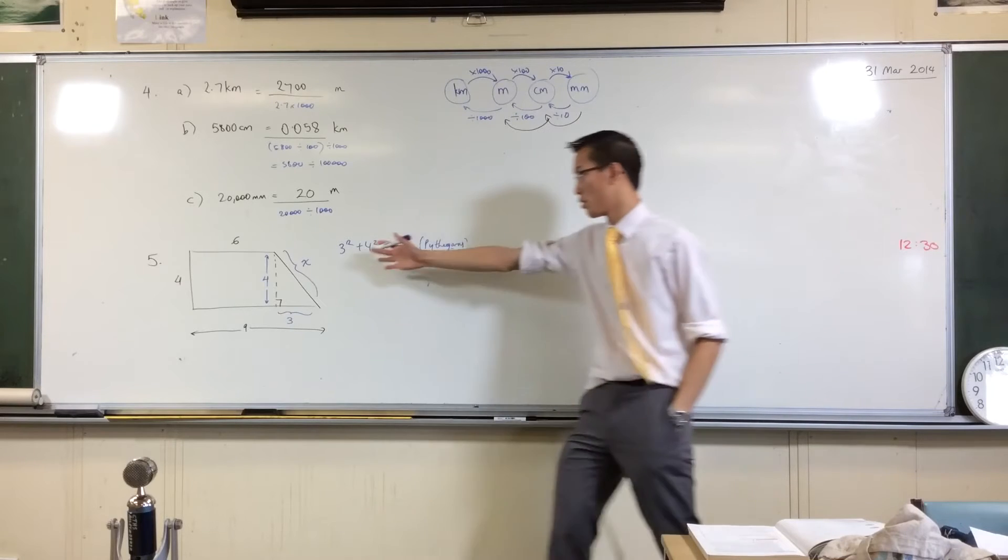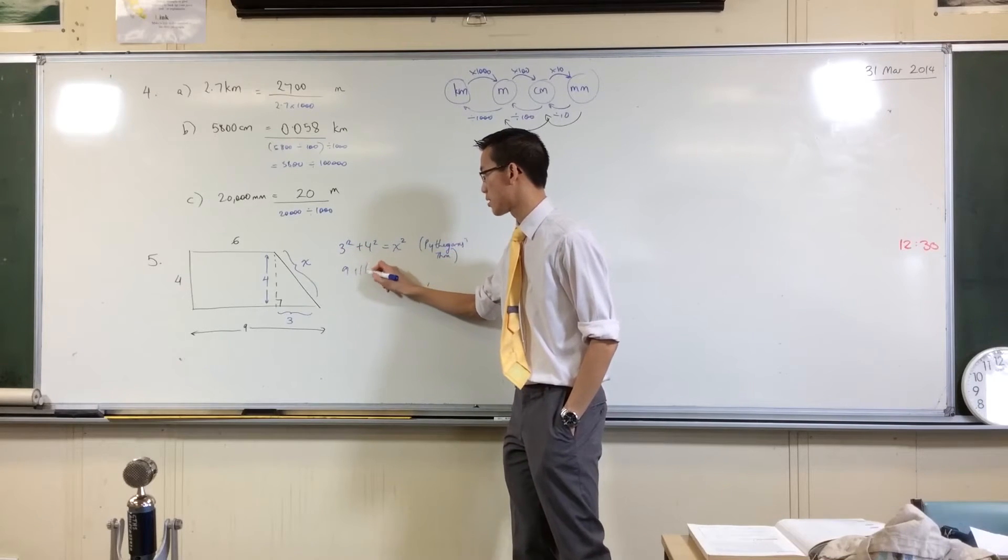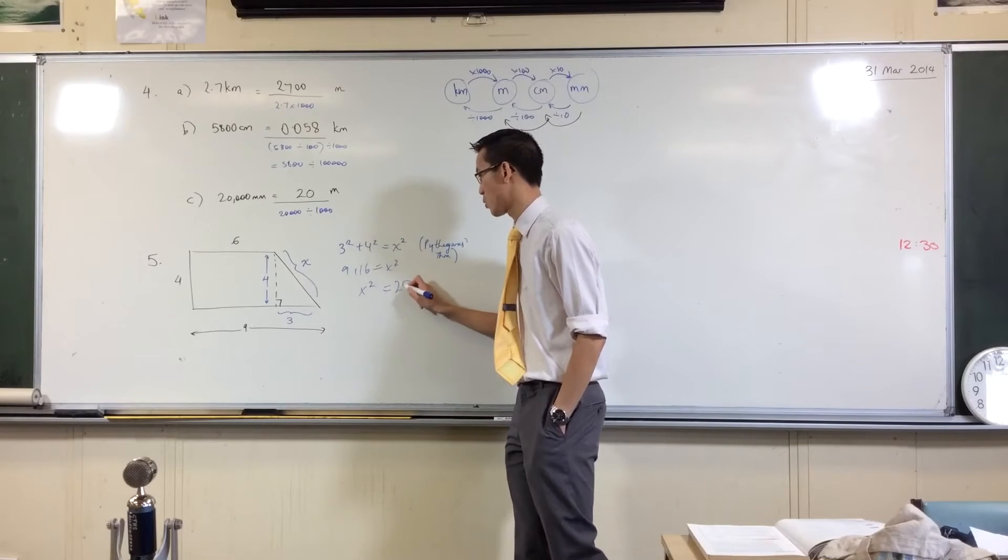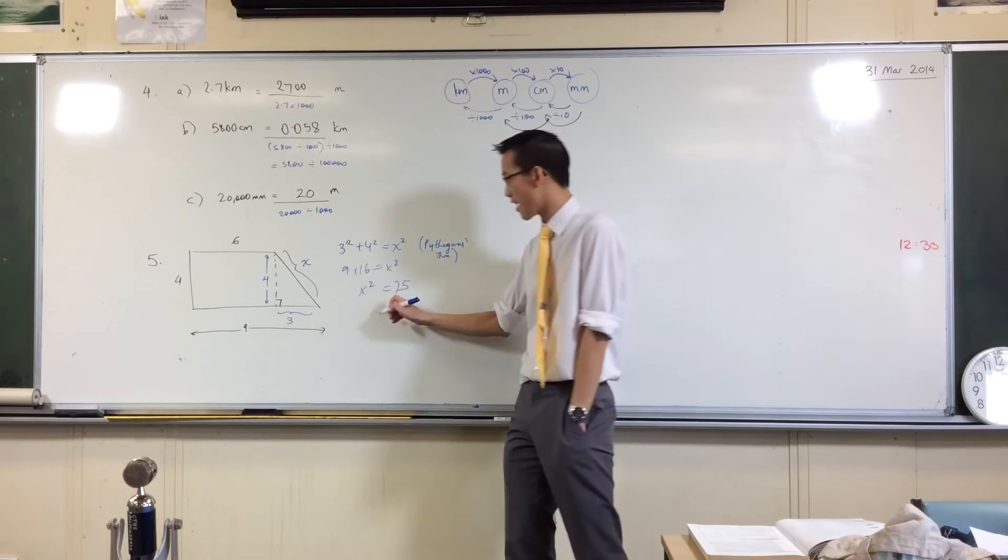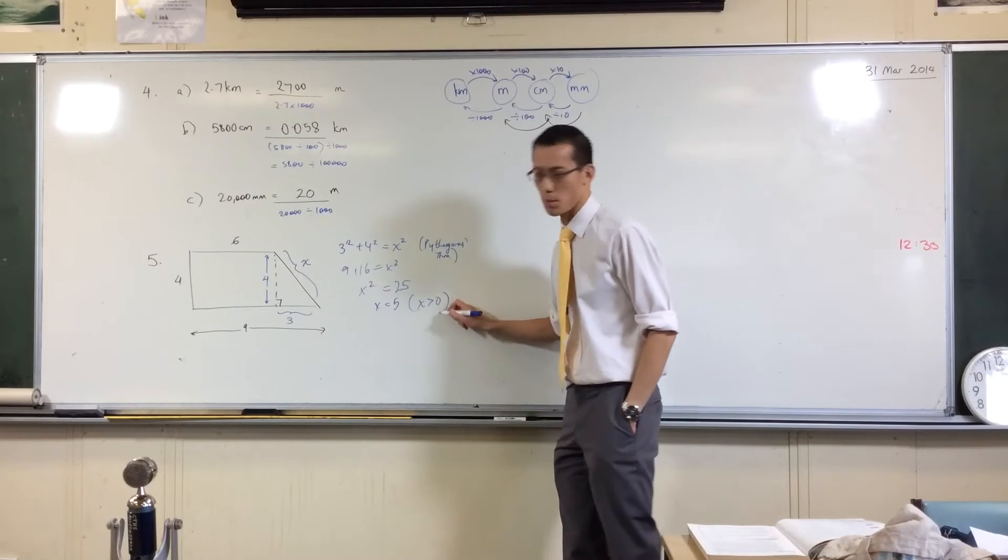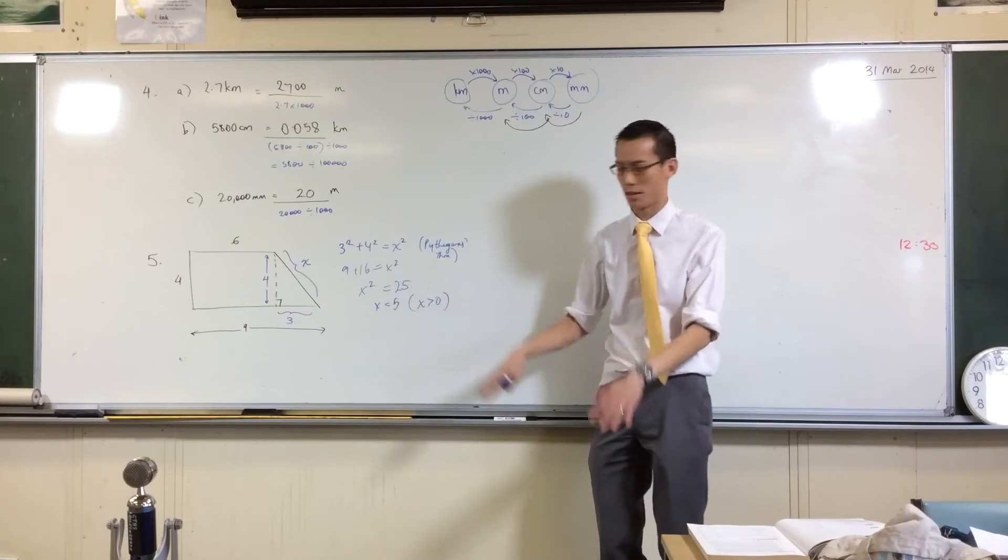So that's nine plus 16, I'll just switch them around to the other side. That's 25. So that's why you get X equals five, because we're only interested in the positive value. Negative five is a solution there, but we don't want it.